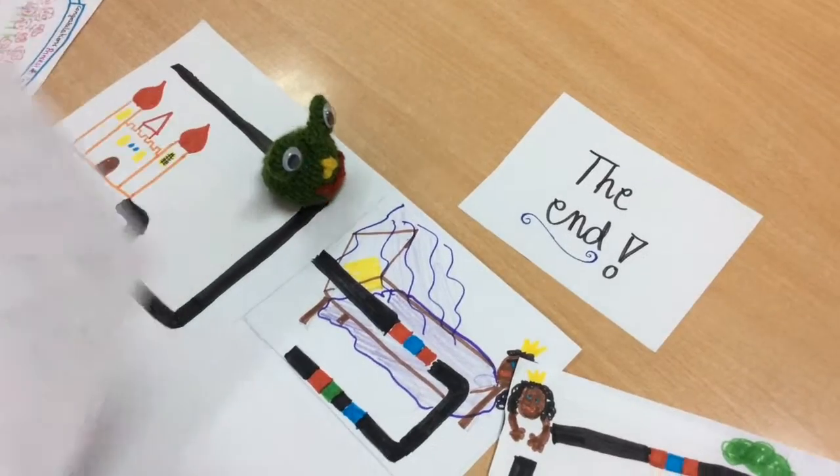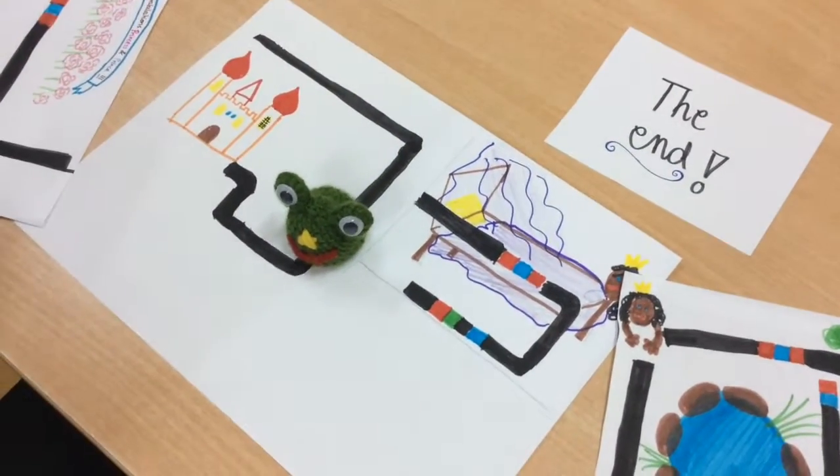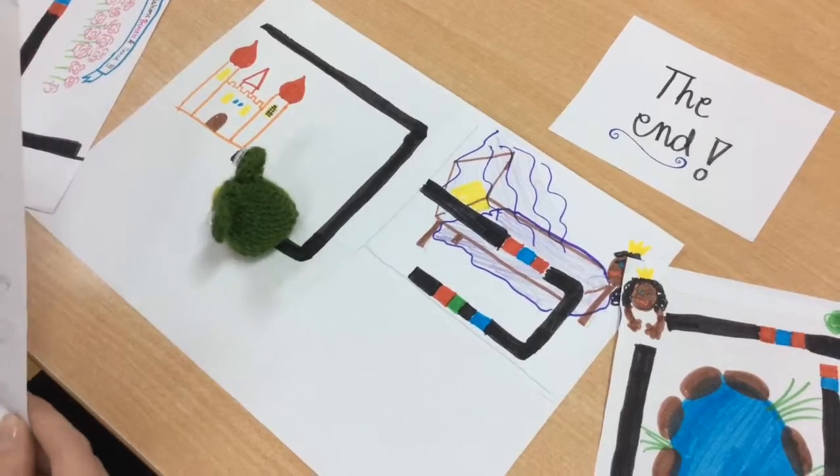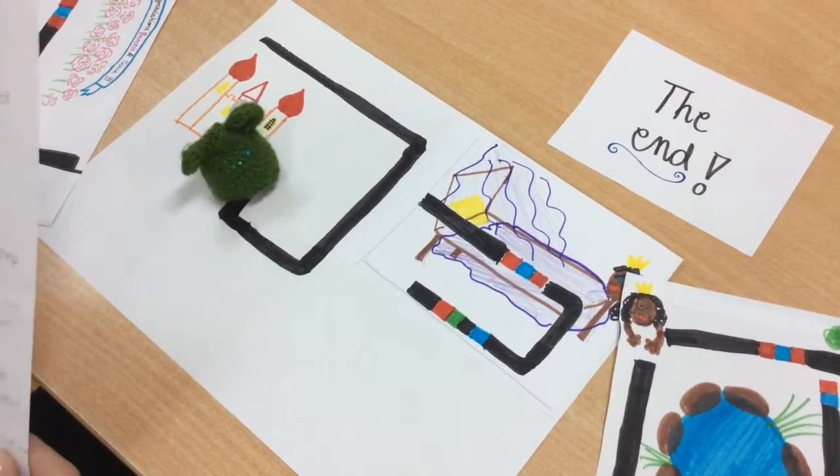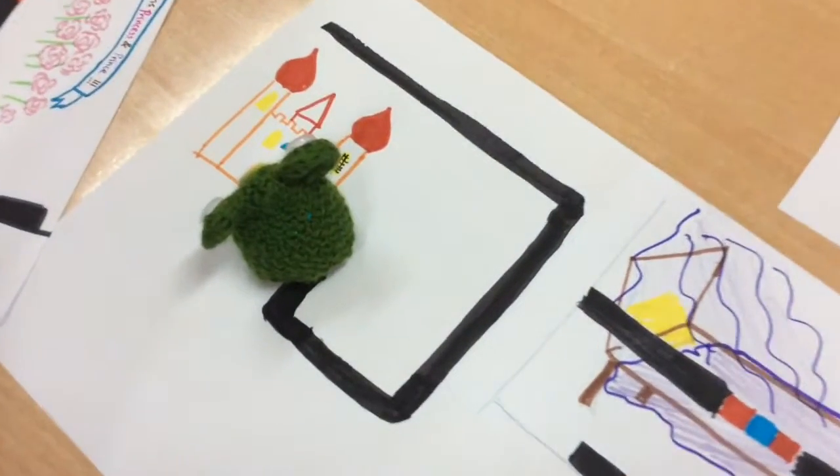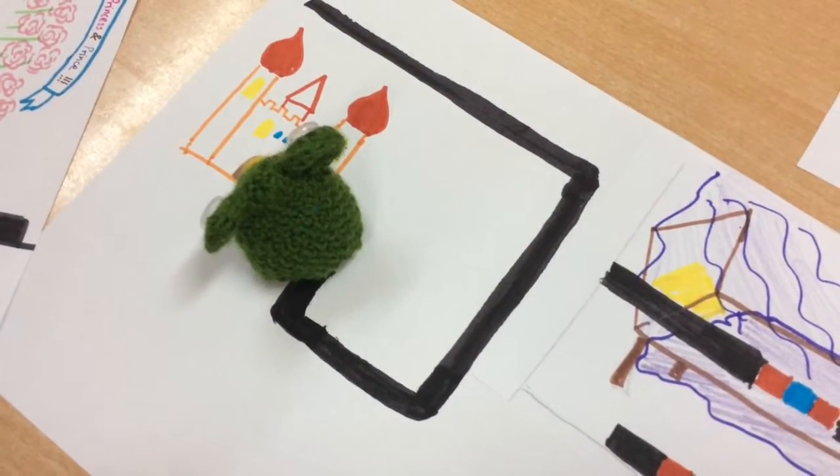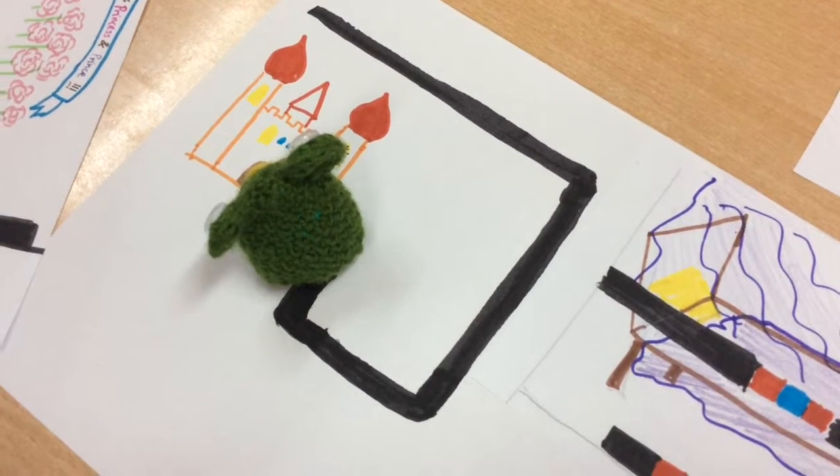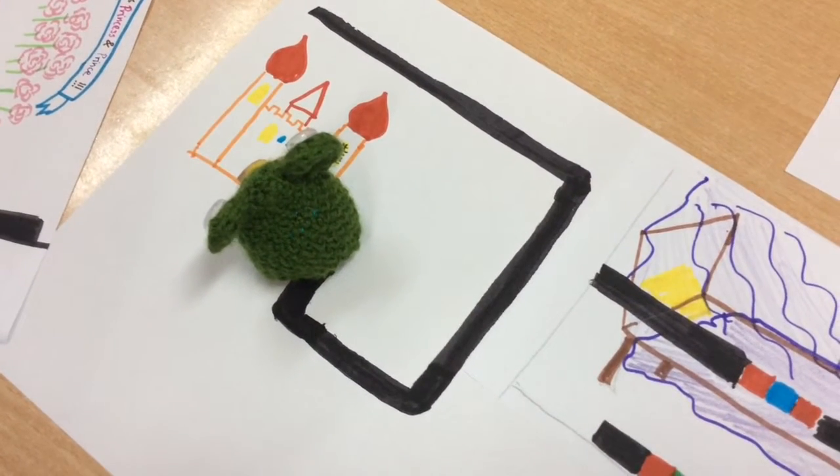The frog ran after the princess and stayed in front of the palace. He heard while princess was talking with her father. King said, a promise is a promise and you must keep your word. You must let the frog stay here. The princess was very angry, but she had no choice and let the frog stay.